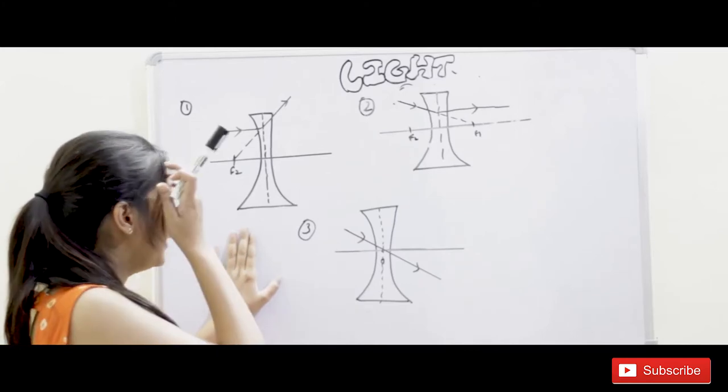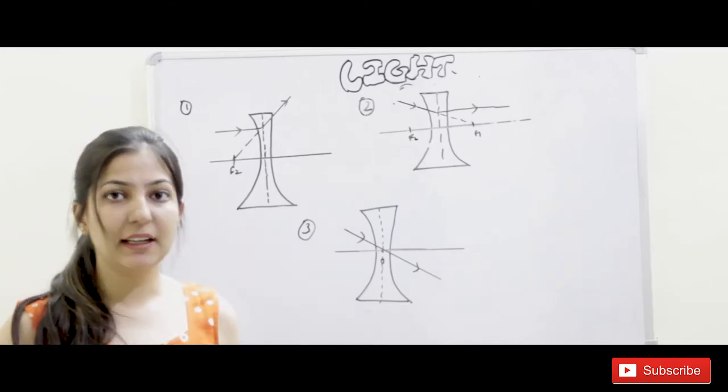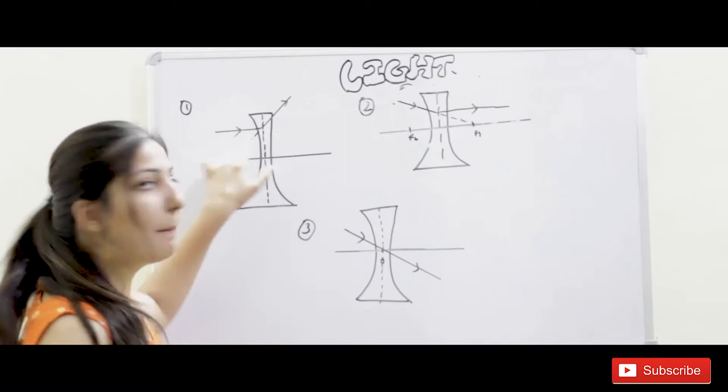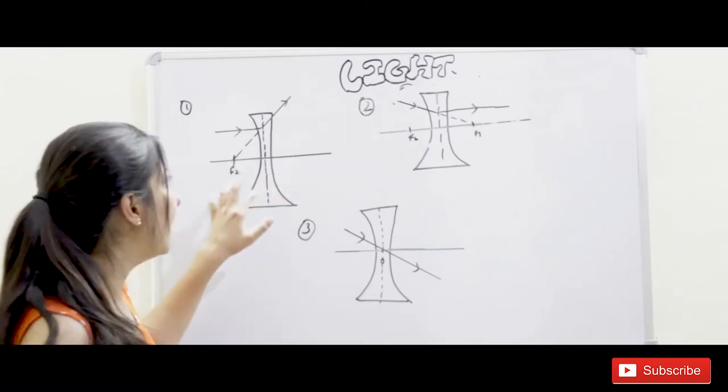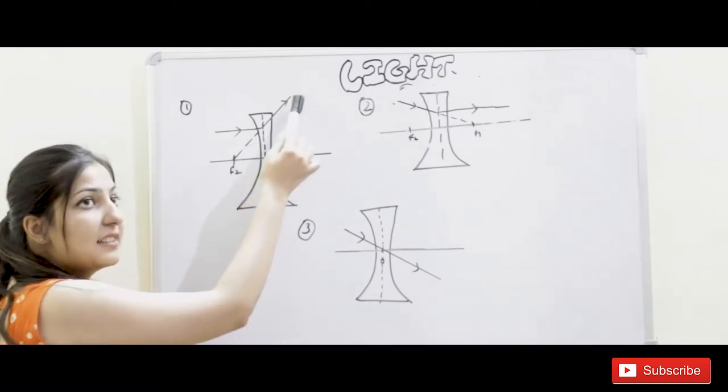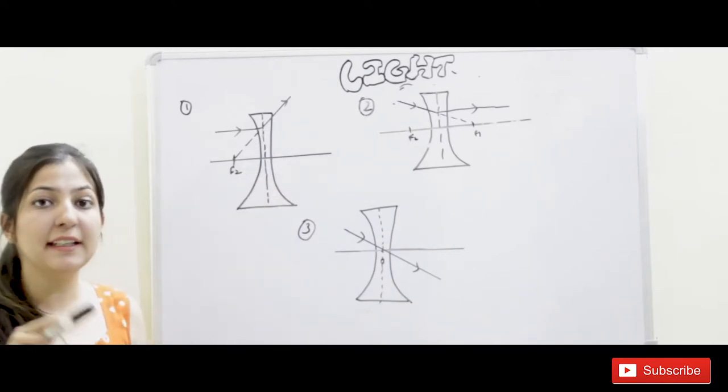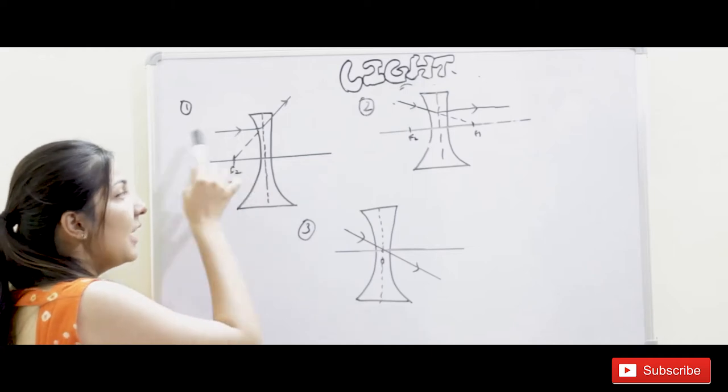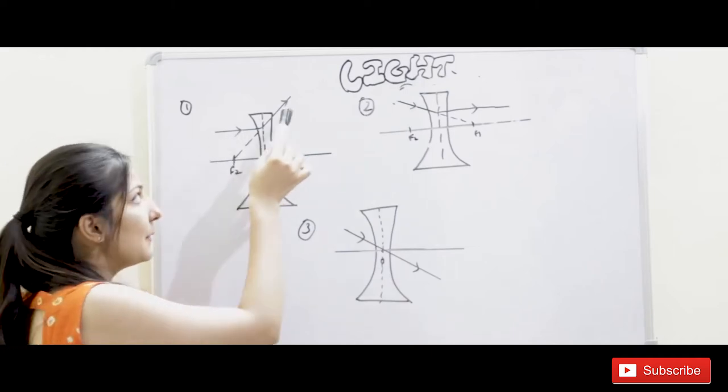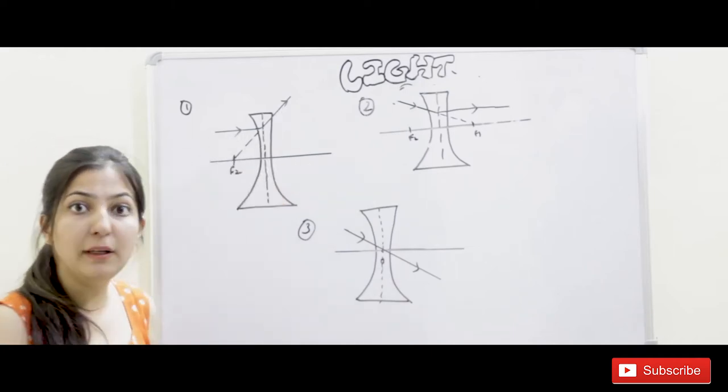First, we are going to the first rule. We will know what to converge. If we send the rays parallel, then it will converge and appear to pass through F2. F2 is the point on the principal axis at which the rays coming parallel to the principal axis appear to meet after refraction.